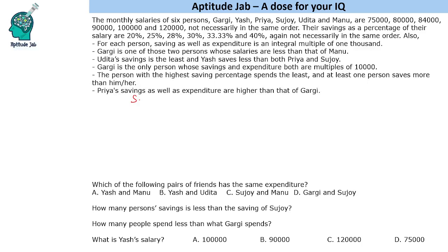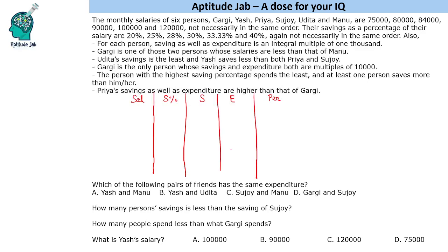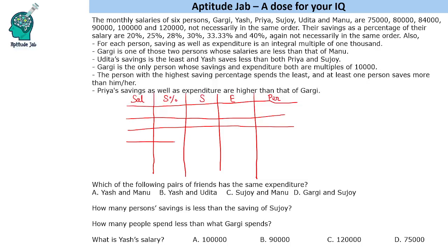Let us make a table with columns: salary, saving percentage, savings, and expenditure. One important tip: do not start the first column as the name — that's a mistake most aspirants make. Instead, start with numerical data because salary is the key thing here. Based on salary we will map the percentages and then assign persons. We have six persons numbered one through six.